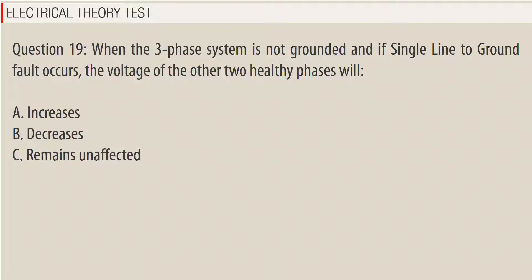Question 19: When a three-phase system is not grounded and a single line-to-ground fault occurs, the voltage of the other two healthy phases will: A. Increase, B. Decrease, C. Remain unaffected. Answer: A.